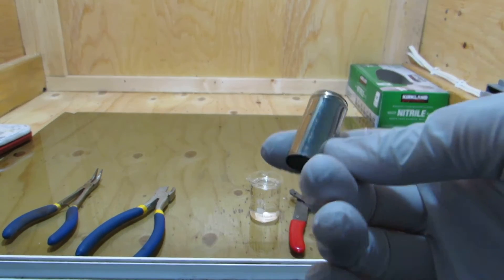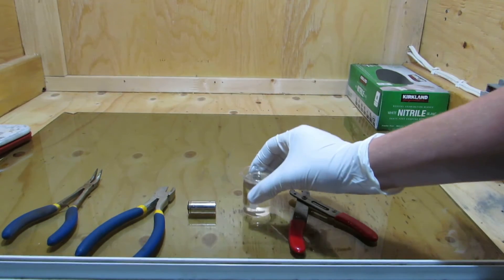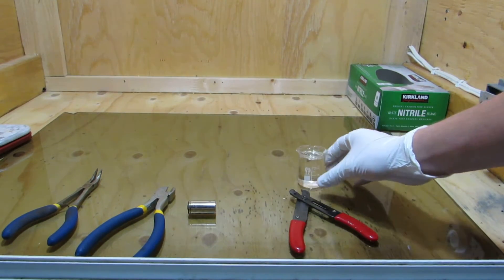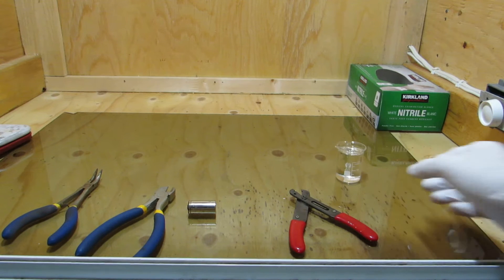The outer wrapping can first be removed, and a beaker of mineral oil can be prepared. It is necessary to store lithium under mineral oil immediately after removing it from the battery as it will immediately begin forming lithium oxide and lithium nitride in the air.